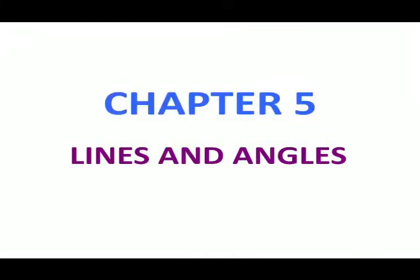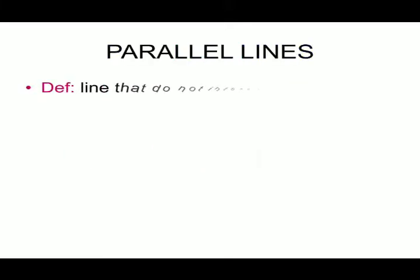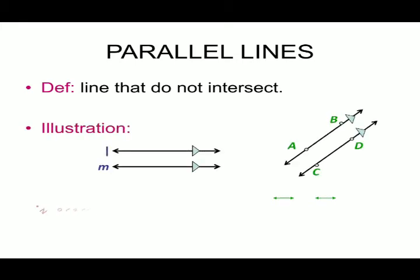Chapter 5: Lines and Angles. The first topic is parallel lines. The definition: lines that do not intersect are called parallel lines.